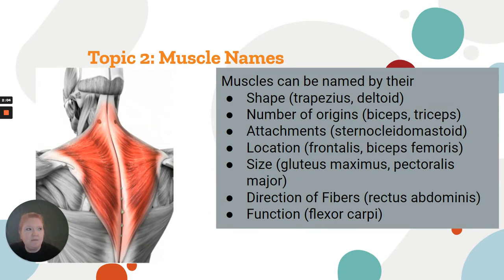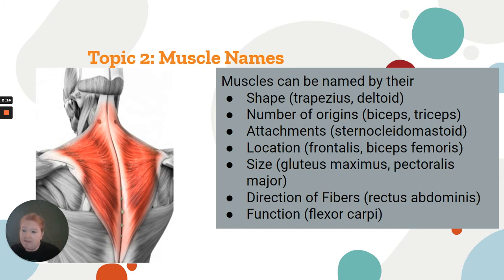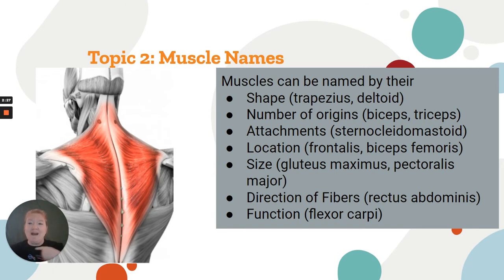Muscles are named according to many features, like shape — the trapezius, the deltoid — the number of origins, the number of attachment points like the biceps (two attachments) and the triceps (three attachments), and where they actually attach. The sternocleidomastoid is a great example: sterno for sternum, cleido for clavicle, mastoid for the mastoid process on the temporal bone.